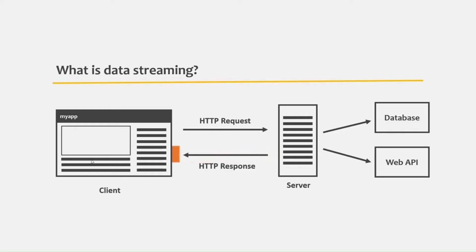If we send the entire 1GB file at once, the user will have to wait for the complete file to download before they can start watching the video. But instead of sending the complete data at once, the server can send the data in small packets. The 1GB data can be divided into small packets and sent to the client one after the other. In this way, the user does not have to wait for the complete file — they can start watching as soon as the first packet arrives. This is called streaming of data.